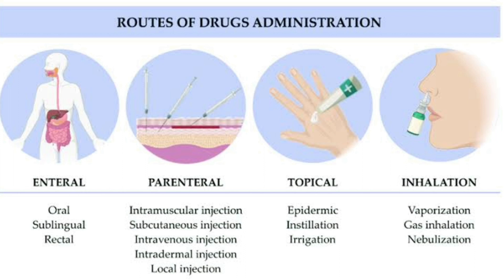First we will talk about what routes of drug administration determine. It determines the speed, duration of action, intensity of action at a given site, and often its safety. The routes are chosen according to the need and condition of the patient and the nature of the drug. The available routes are enteral, parenteral, topical, and inhalation routes.